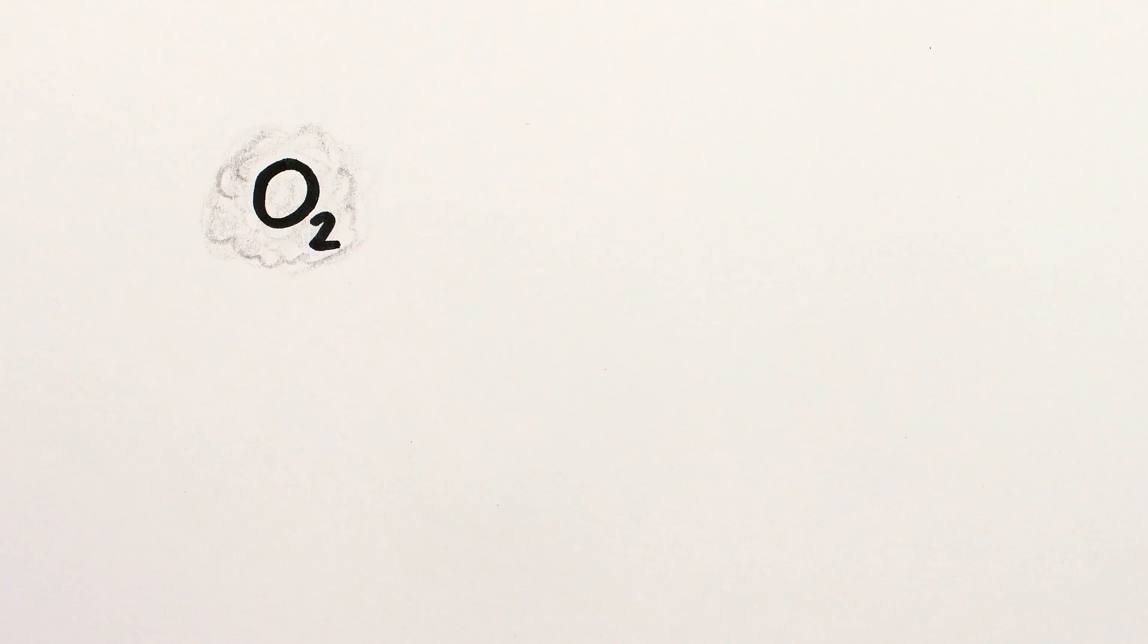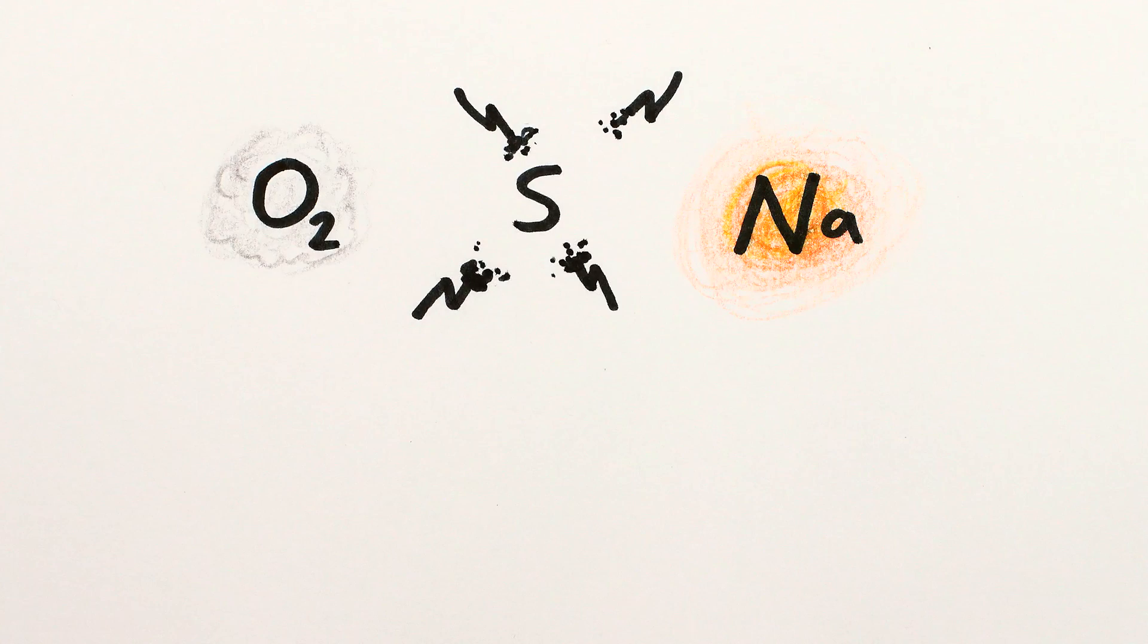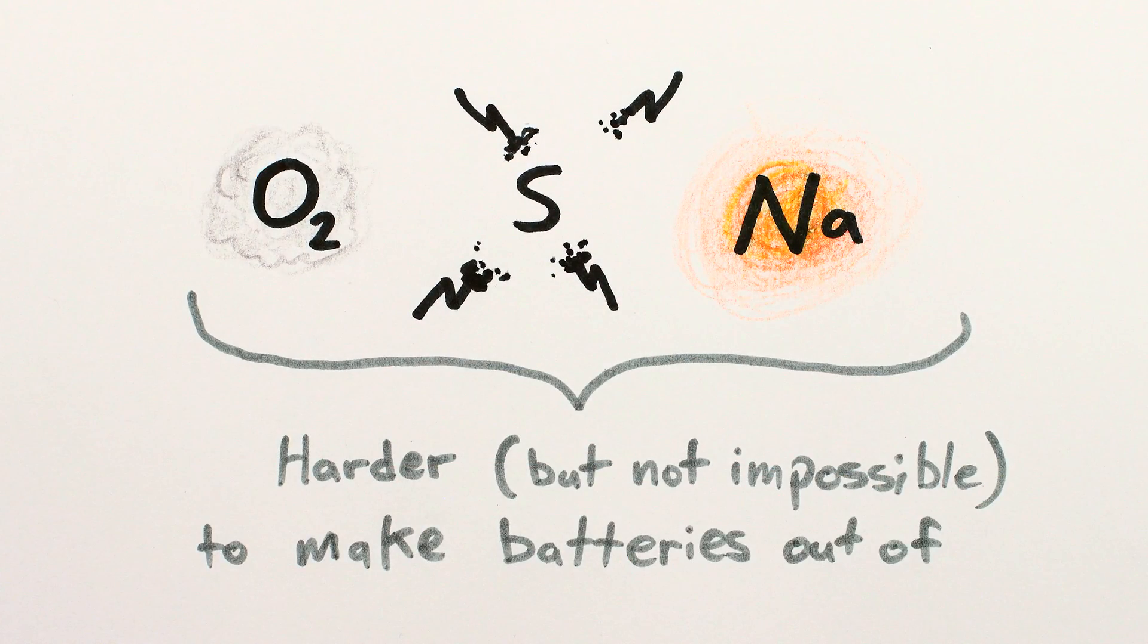For example, oxygen is a gas, sulfur is a horrible conductor, and sodium needs to be molten – challenges to using any of them to make batteries.